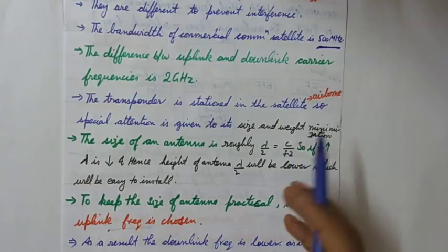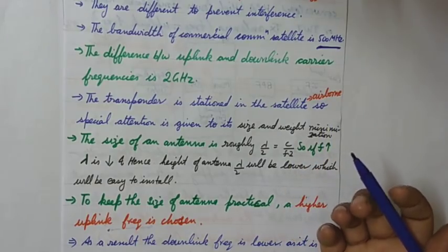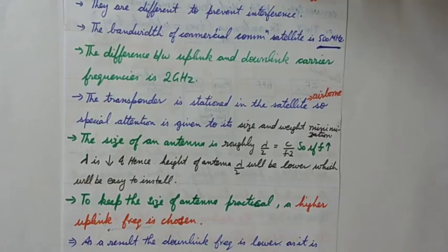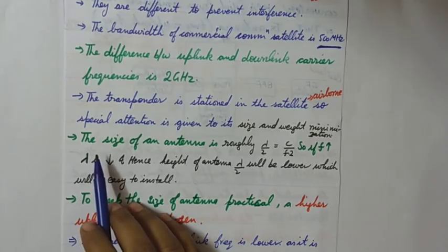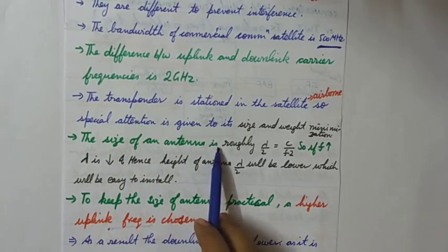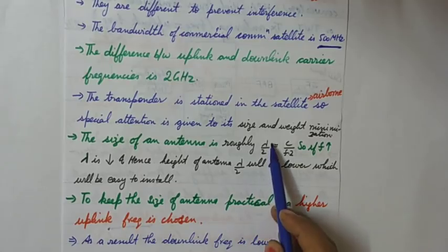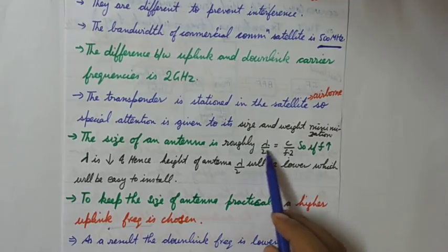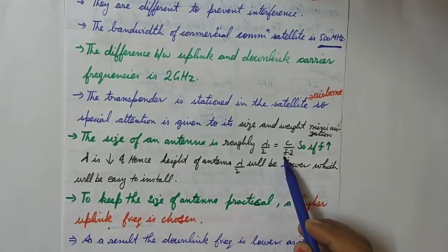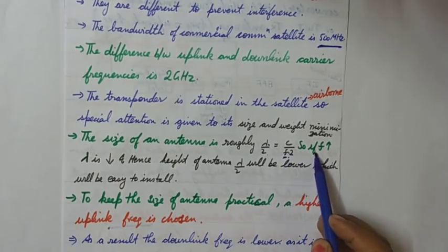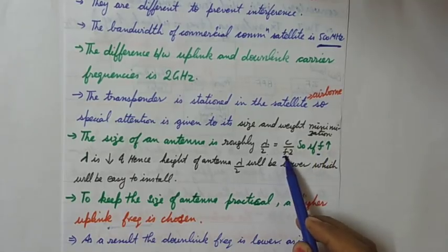So special attention is given to the size and weight minimization of the antennas of the transponder, because the transponder has a receiving antenna and then again there is also a transmitting antenna. So antennas play a main part and the size can be controlled. The size of an antenna is roughly lambda by 2. Lambda is the wavelength and this lambda is c by f.